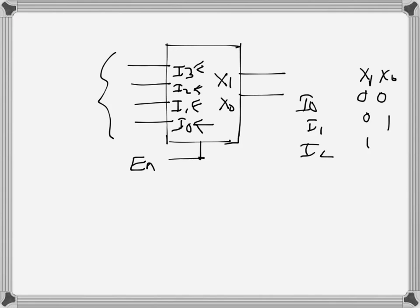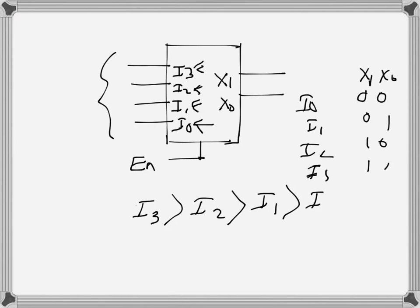If i0 is high the output is 00 (x1 x0), i1 gives 01, i2 gives 10, and i3 gives 11. That's an ordinary encoder. In a priority encoder, more than one input line can be active at a time, but each input has a priority over others. Conventionally, i3 has the highest priority, then i2, then i1, and i0 has the least priority.